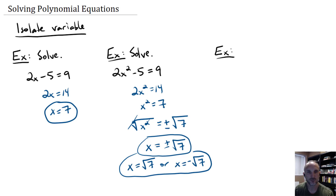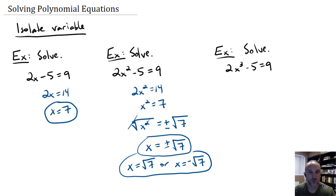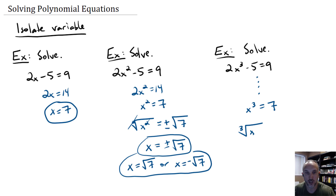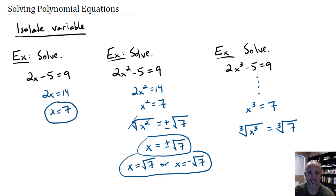What if the power is the third power? Same idea. We're going to get x cubed by itself, getting x cubed equals 7. To undo a power, use the same root — so I'll take the third root, also called the cube root, of both sides. Notice that the cube root is an odd root, so you do not have multiple odd roots of any number. You don't put a plus or minus. The third root cancels the third power, leaving x, and we get one solution: the cube root of 7.